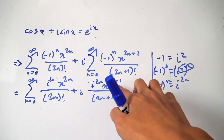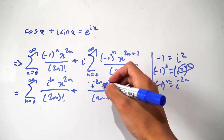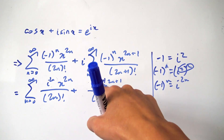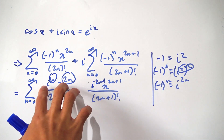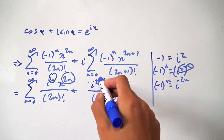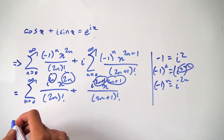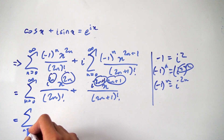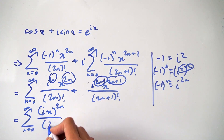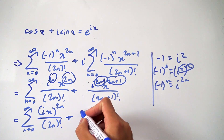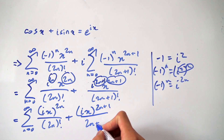For the second fraction, we have i to the 2n but we want 2n plus 1. We're off by one factor of i, but notice we have an i sitting in front already. So let's invite that i into the fraction, giving us i to the 2n plus 1 in the numerator. Now in both fractions, the powers of i and x match — 2n and 2n, and 2n plus 1 and 2n plus 1 — so we can combine the bases. We now have the sum from 0 to infinity of ix raised to the 2n over 2n factorial, plus ix raised to the 2n plus 1 over 2n plus 1 factorial.